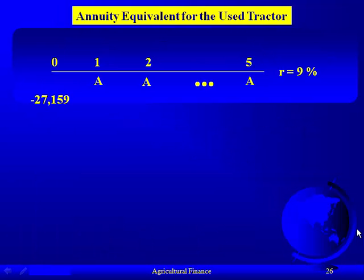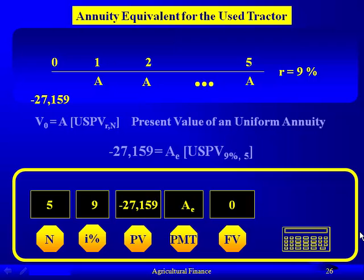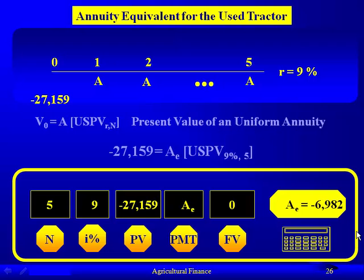We can do the same thing for the annuity equivalent for the used tractor. The only difference is that the net present value for the used tractor was calculated as negative $27,159, and its life is over 5 years. Everything else is the same — the only thing to change in your calculator is the present value and the N to 5. Compute the annuity equivalent, and it comes out to negative $6,982.